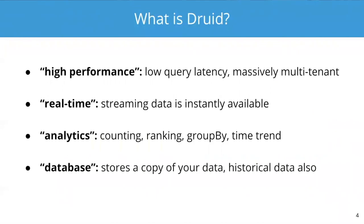So high performance — what that means is really just low query latency and massively multi-tenant. You issue a query, it comes back straight away with very little latency. We call it sub-second, trying to get the queries back to you under a second. And you can have a lot of people querying Druid at the same time, supporting use cases where a single application is issuing many queries, and also many people are querying the cluster at the same time with no performance degradation.